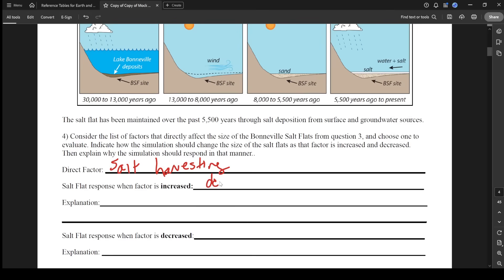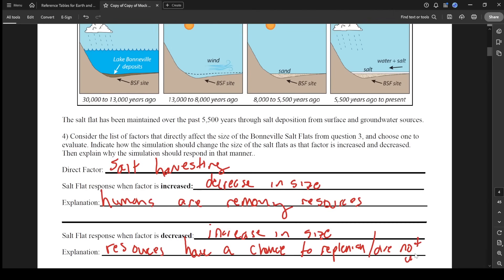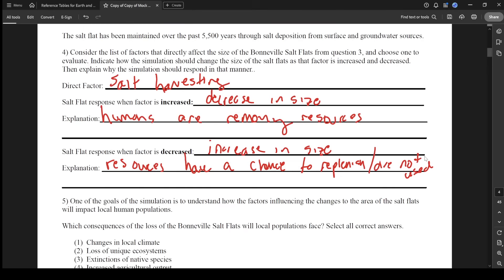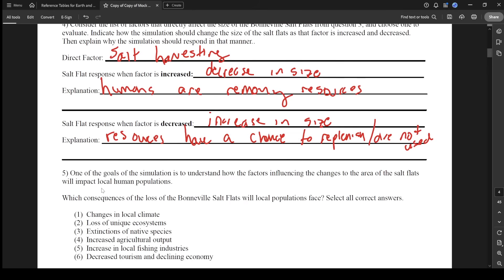If we increase the amount of salt harvesting, the salt flat is going to decrease in size. Explanation: humans are removing resources. And then if the harvesting is decreased, the salt flat will increase in size. Resources have a chance to replenish or are not used. So if we don't use them, it might grow back. But if we keep using it, it's going to be decreasing constantly.